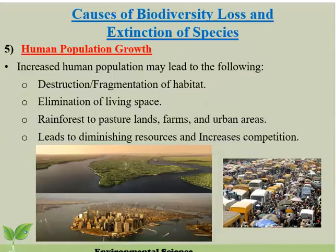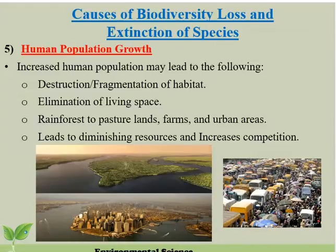Number five is human population growth. Pollution, over-harvesting, invasive species — all these things are really due to either human population growth or human activity, so really all of them could be lumped into this one. Increased human population may lead to destruction and fragmentation of habitat, elimination of living space — taking habitat from rainforests, pasture lands, farms, urban areas. It also leads to diminishing resources and increased competition: you have less resources for more organisms to share, making it much more stressful for species.